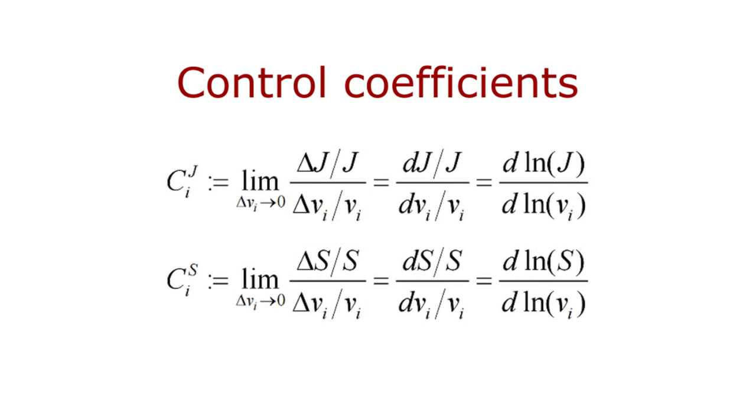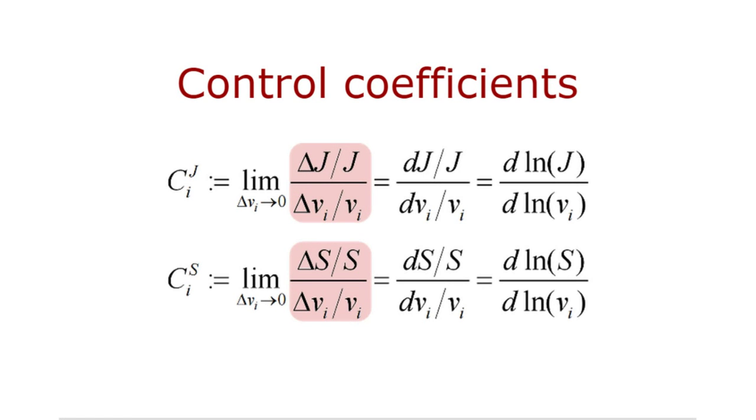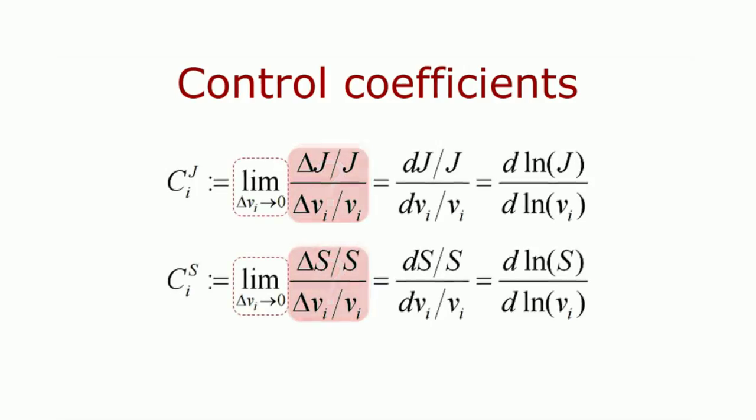The reason for the perturbation to be taken infinitesimal is that the system's behavior is non-linear. What we mean by that is that the response of the system, for example the change in the flux J or the concentration S, is not proportional to the change in VI. The values of these two ratios depend on the amplitude of the perturbation. This introduces an ambiguity in how to define the control coefficients. To do away with such ambiguity, the control coefficients are defined for infinitesimal perturbations. When the perturbations are infinitesimal, or very small, the behavior of the system can be approximated by linear response, and these ratios become unequivocally defined.